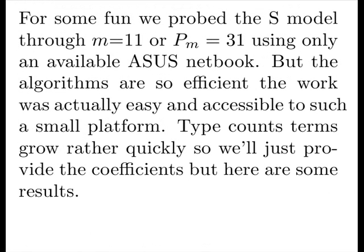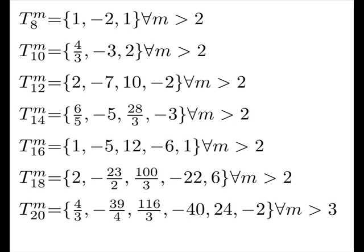For fun, we probed the S model through M equals 11 or the prime of 31 using only an available ASUS netbook and a 5-year-old model at that. But the algorithms are so efficient, the work was actually easy and accessible to such a small platform. Type count terms grow rather quickly so we'll just provide the coefficients here but here are some results. We'll show you up to 20 but we calculated to 32. Note how they're growing.